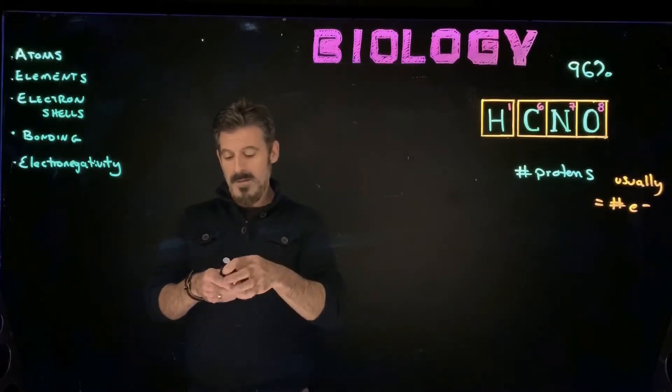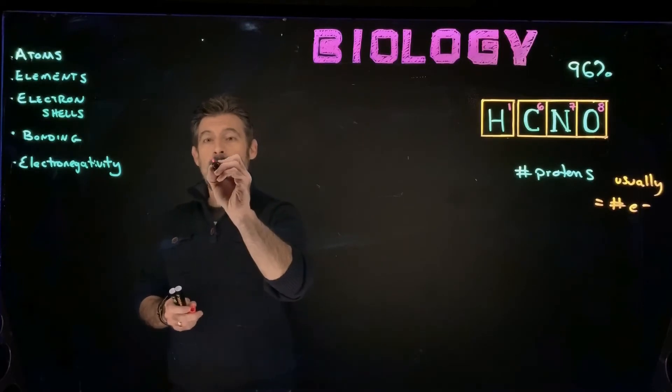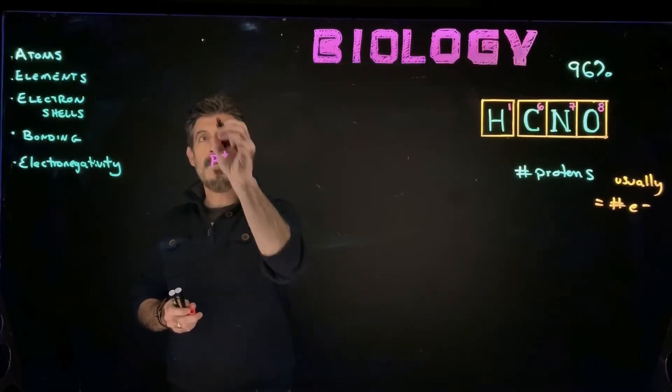So for hydrogen, we'll start off with this. It's the most simple of the elements here. It has one proton. So this is hydrogen.